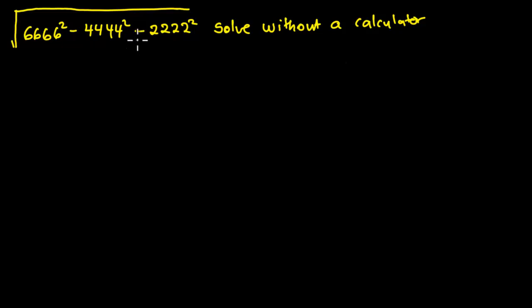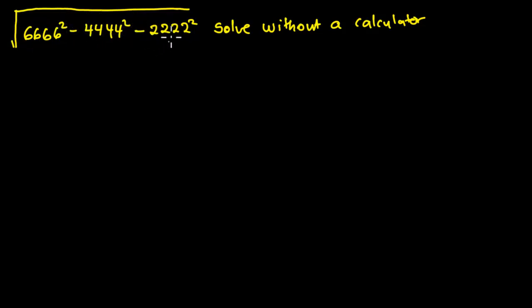Now we are given the square root of 6666 squared minus 4444 squared minus 2222 squared. So let's start.